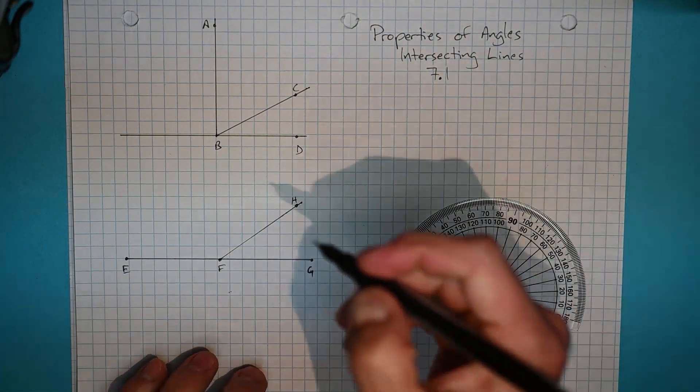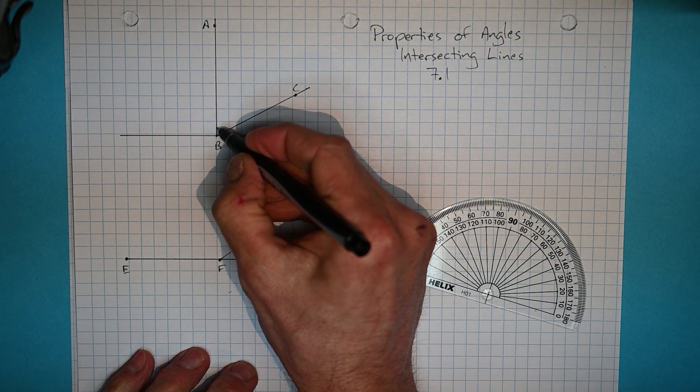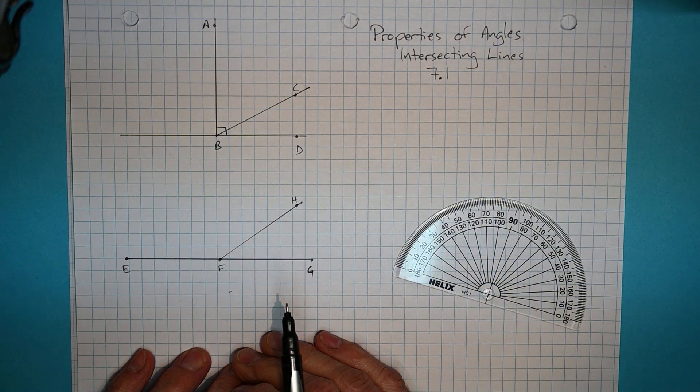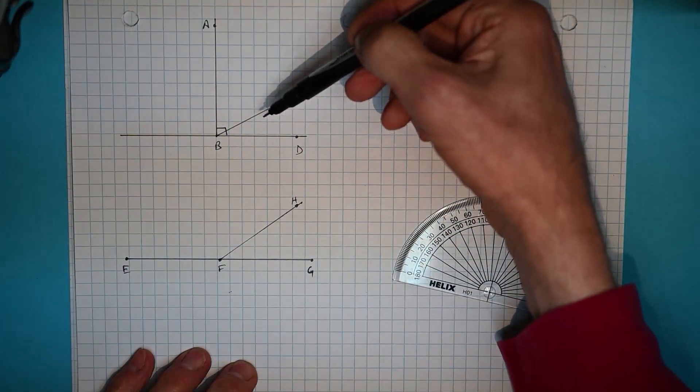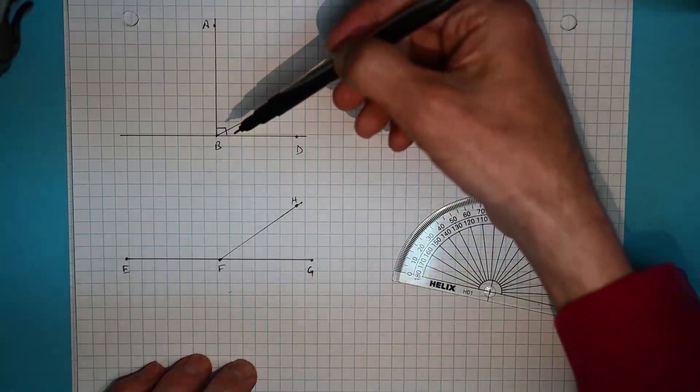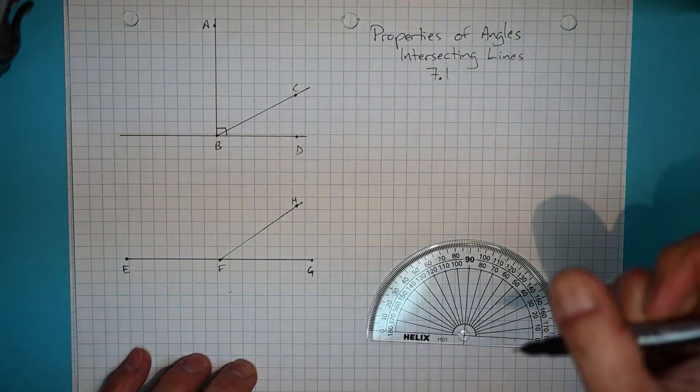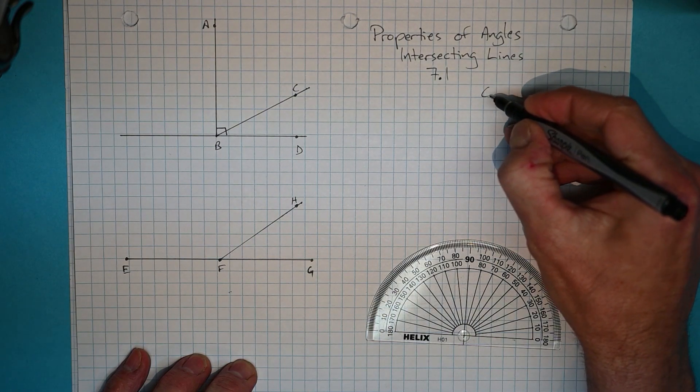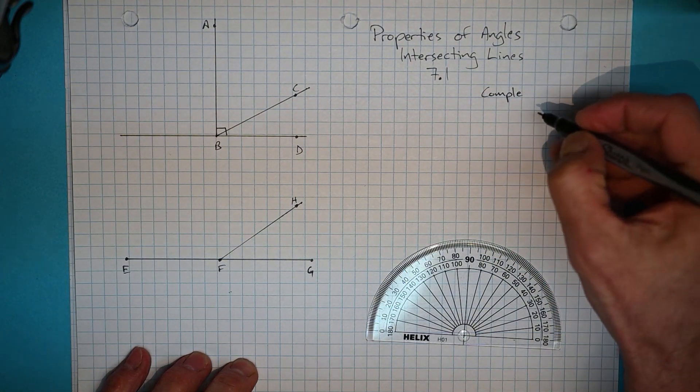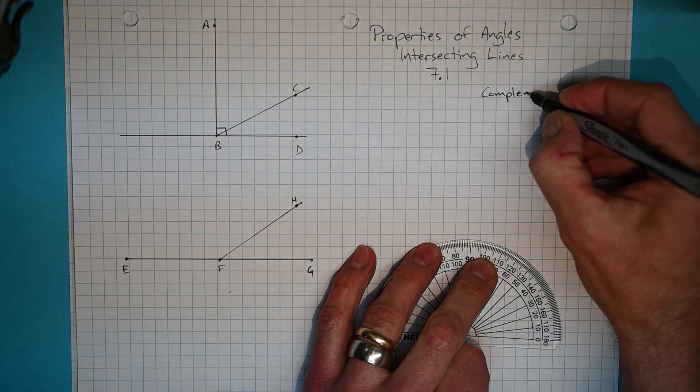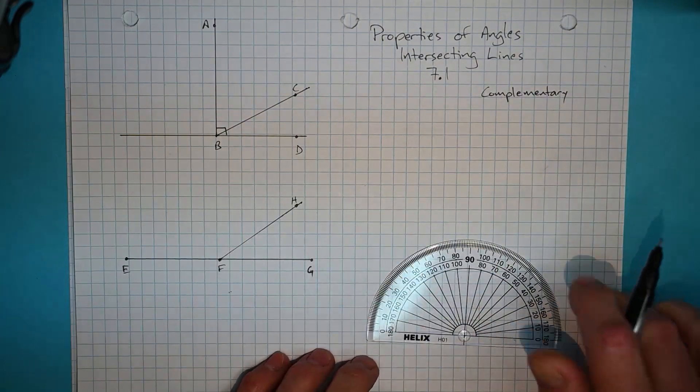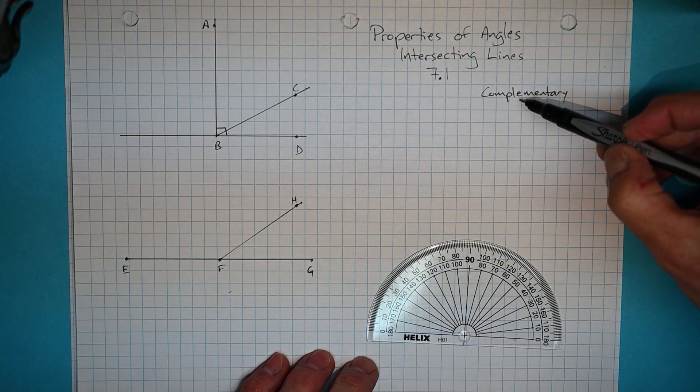We're going to begin over here where I have drawn a 90 degree angle, a right angle up at the top, and we have two angles kind of inside that right angle. And in a situation like this we say that these two angles are complementary to each other. I'm going to write that word over here, spelled a little bit differently from the way you would pay a compliment. These are complementary, not complimentary, so there is an E right here.